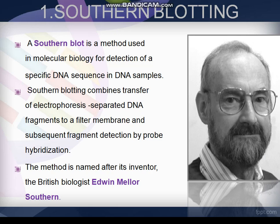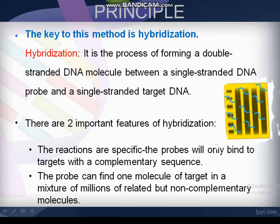The principle of southern blotting technique: the key to this method is hybridization. It is the process of forming a double-stranded DNA molecule between a single-stranded DNA probe and a single-stranded DNA molecule. There are two important features of hybridization: the reaction is specific — the probes will bind to a target with a complementary sequence — and the probe can find one molecule of target in a mixture of millions of related but non-complementary molecules.